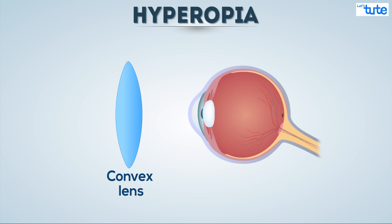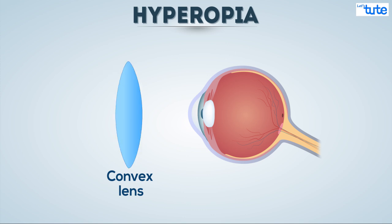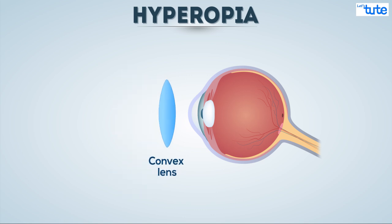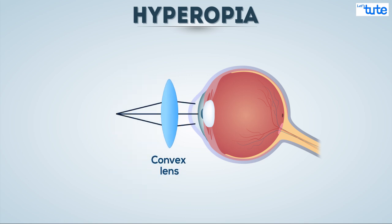This can be corrected with the simple use of a convex lens. A convex lens is a lens that possesses at least one surface that curves outwards and is thicker at its center when compared to its edges. It is a converging lens, meaning that it merges light rays that have been refracted through it.